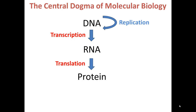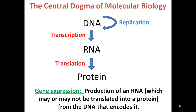So what is gene expression? Gene expression can be defined as the production of an RNA, and that RNA may or may not be translated into a protein from the DNA that encodes it. Gene expression is when DNA is expressed by being produced into an RNA, which can then lead to production of a protein. It's important to note that not all RNAs are converted into proteins — for example, tRNAs and rRNAs are the final product. So production of RNA itself can be considered gene expression, or production of protein via the mRNA.